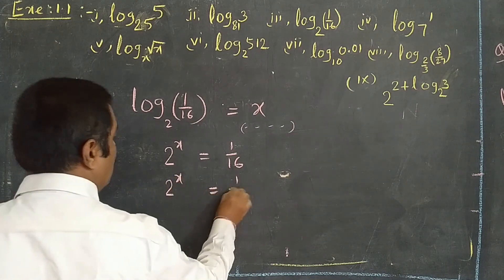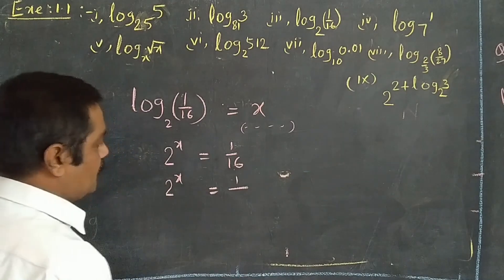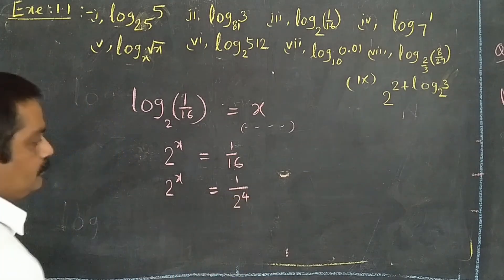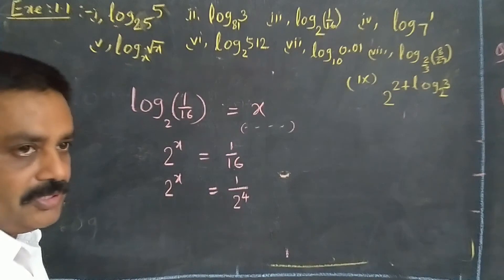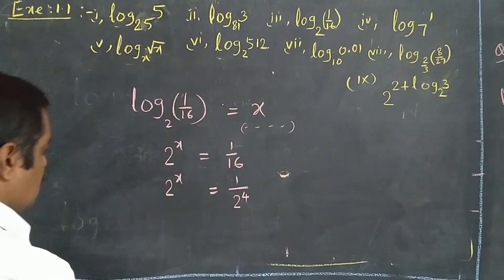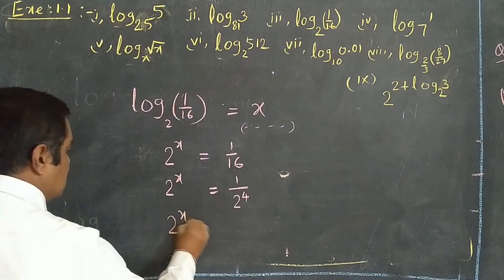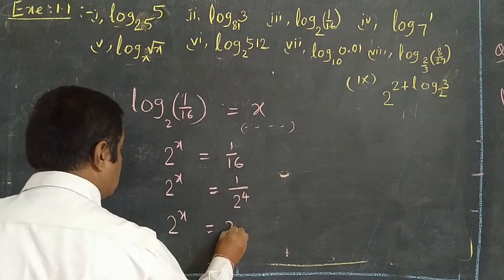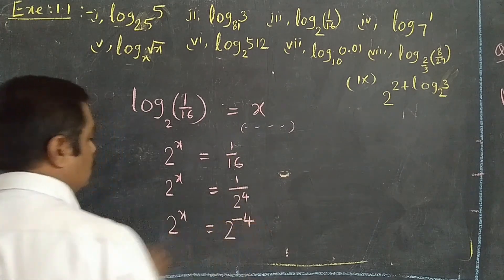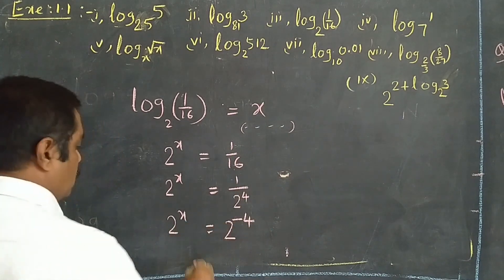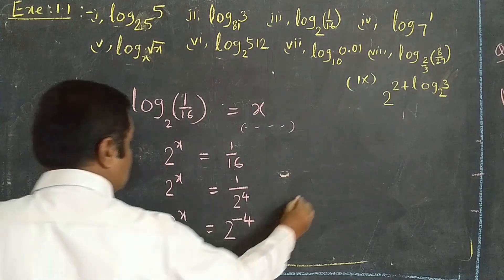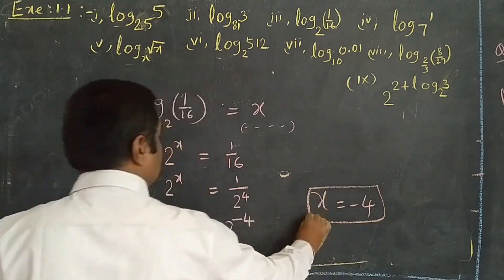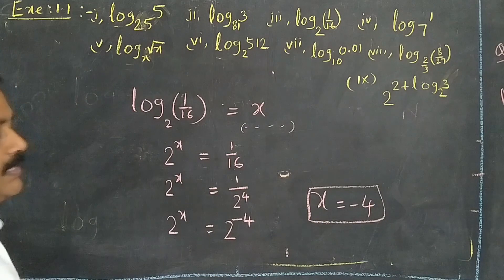So 2^x = 1/16. We have to express 16 as 2^4, since 16 = 2×2×2×2. Then 2^x = 1/2⁴, which means 2^x = 2^(−4). So x = −4. This is the answer.